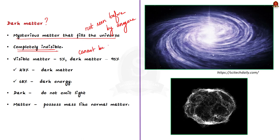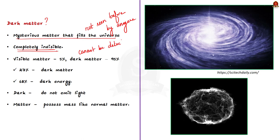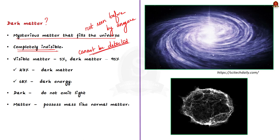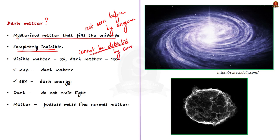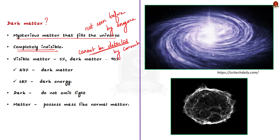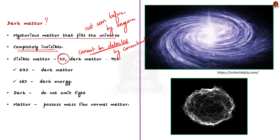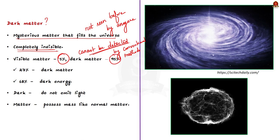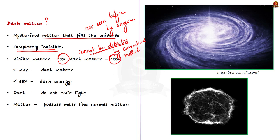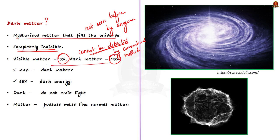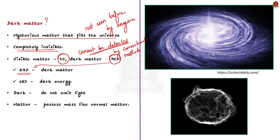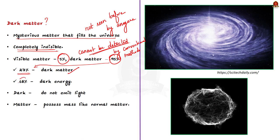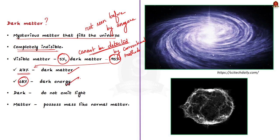Everything we see - the planets, moons, massive galaxies, you and me - makes up less than 5% of this universe. The remaining 95% consists of dark matter and dark energy. Out of this 95%, 27% is dark matter and 68% is dark energy.